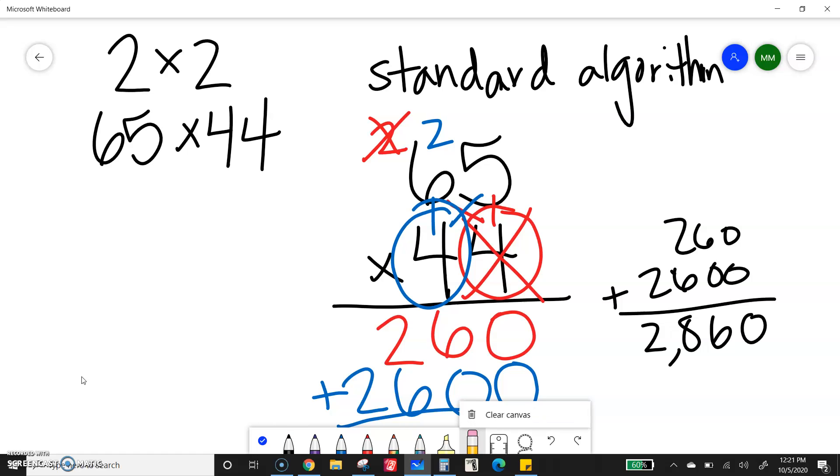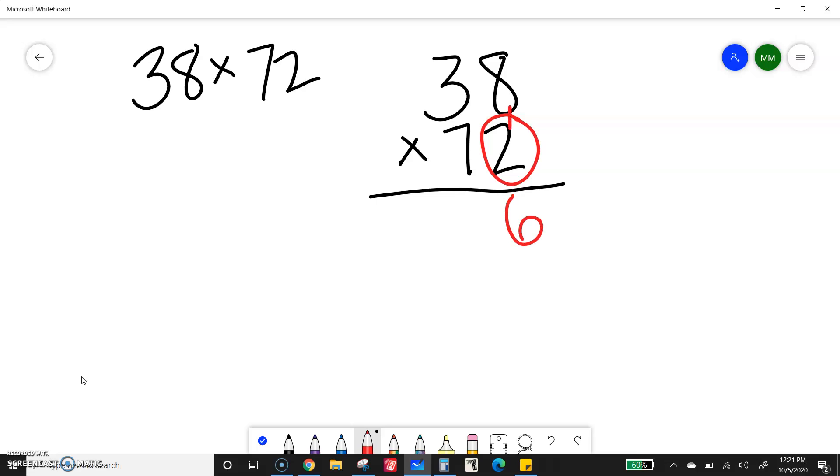I'll show you another example because sometimes we just got to see more examples. I have 38 times 72. I'm going to write them on top of each other, leaving myself more room this time. Again, I'll start with my ones on the bottom. I have 2 times 8 is 16. Write the 6, carry the 1. 2 times 3 is 6 plus 1 is 7.